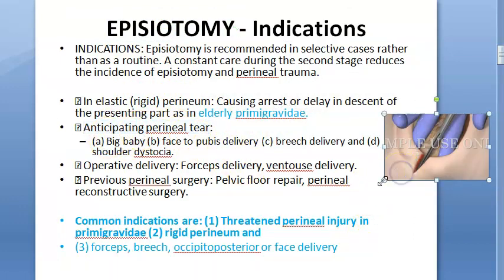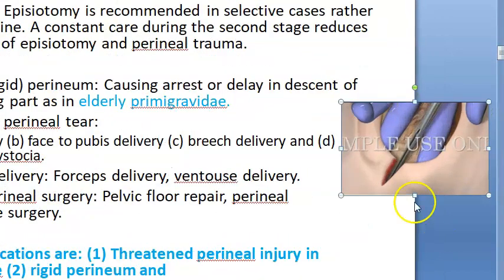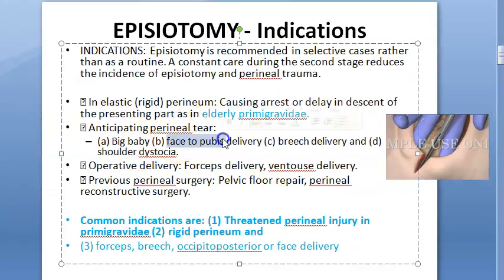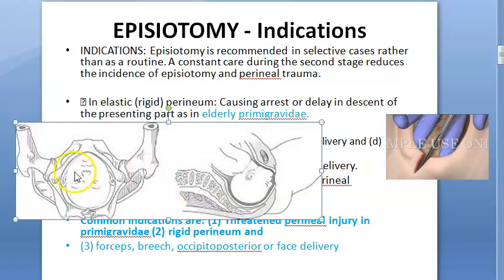Another indication is anticipating a perineal tear. You would expect a perineal tear when there is a big baby, or if the shoulder gets stuck — shoulder dystocia — or if there is a breech delivery, or a face-to-pubis delivery. Face-to-pubis means the face of the baby is toward the pubis of the mother. Here they are showing the mentum going toward the pubis.